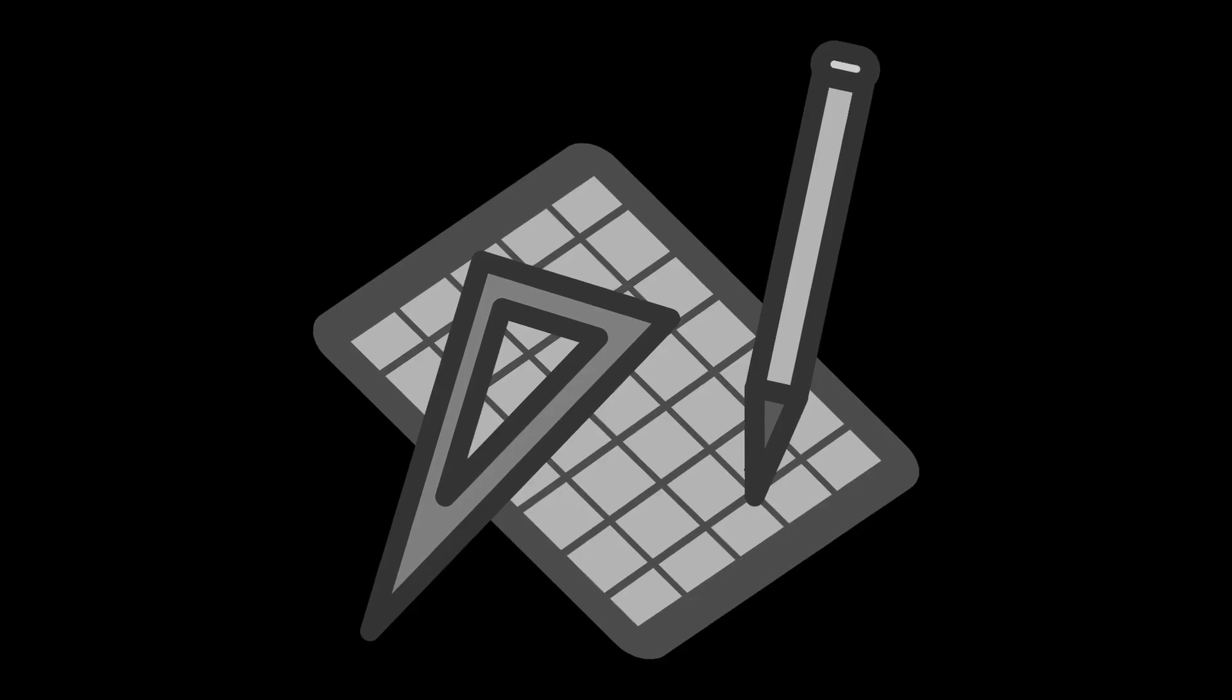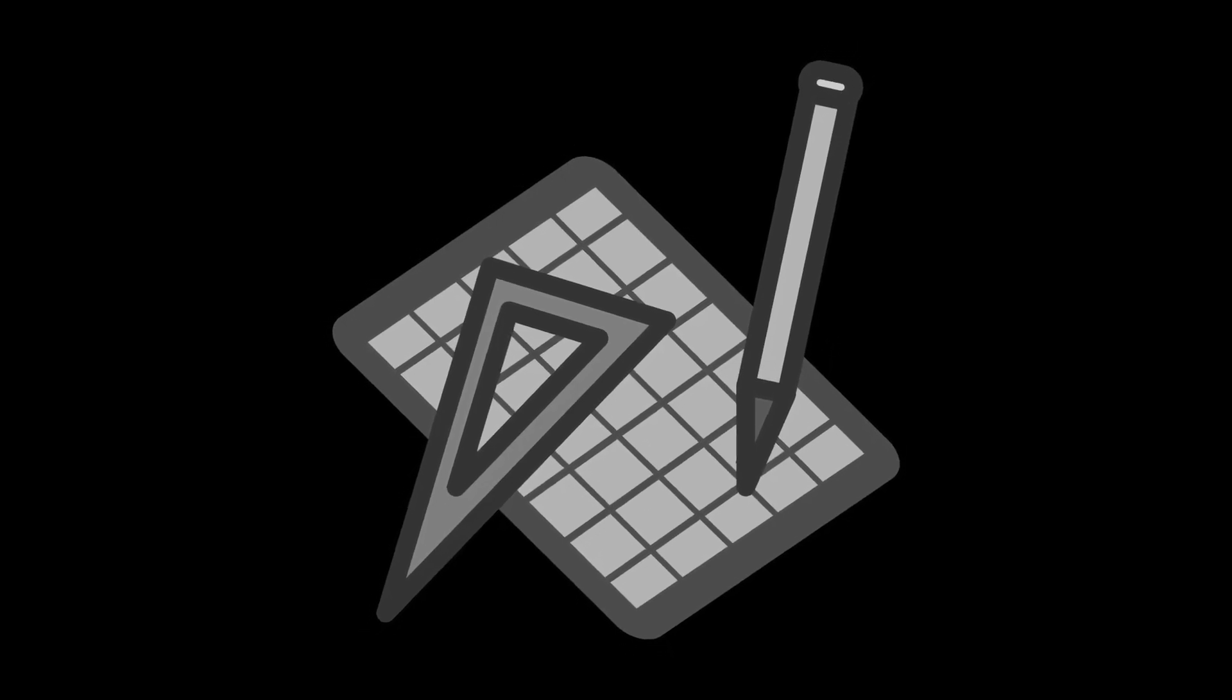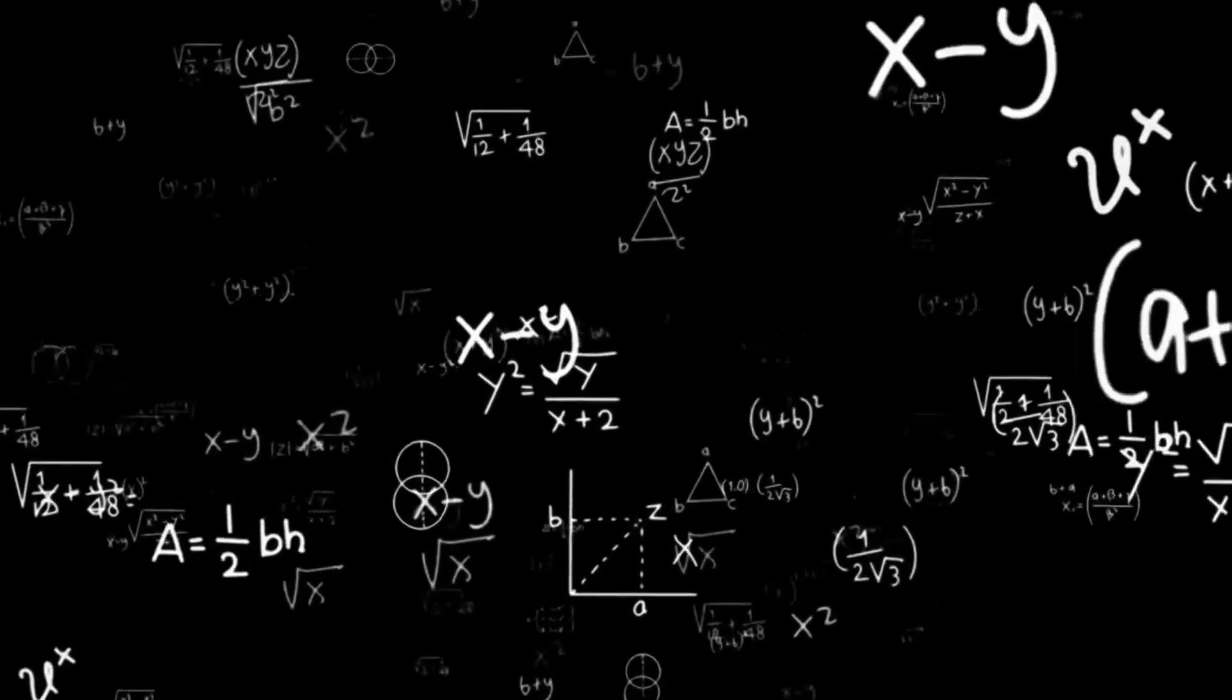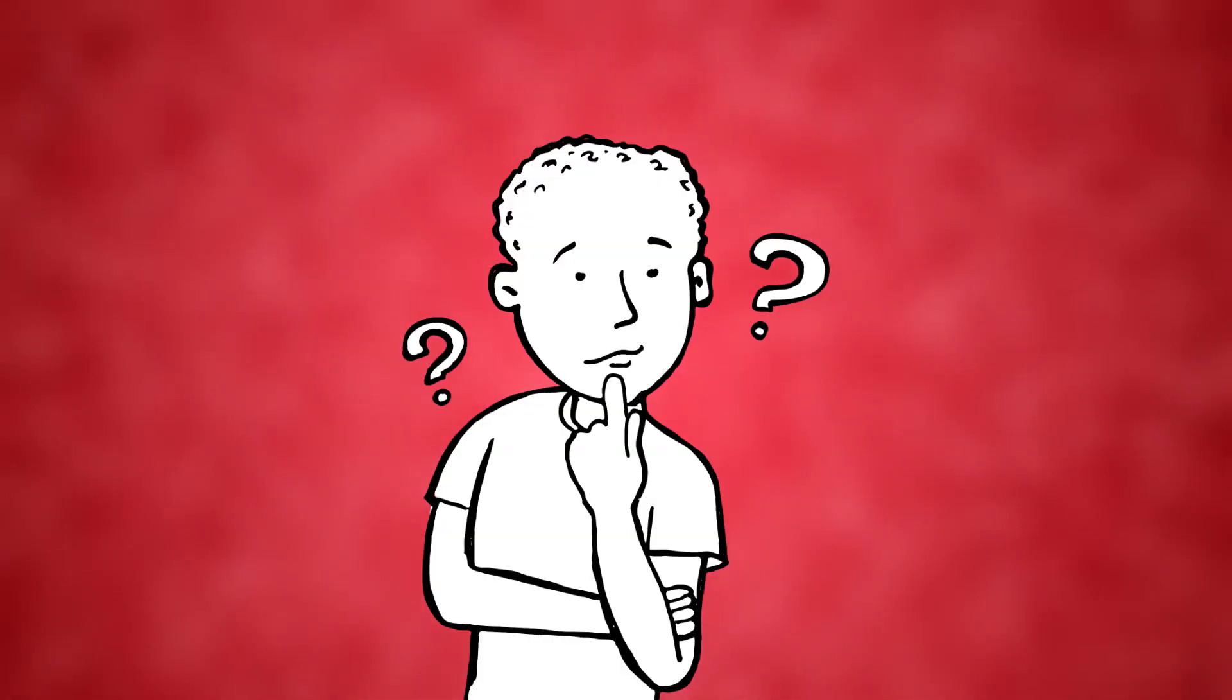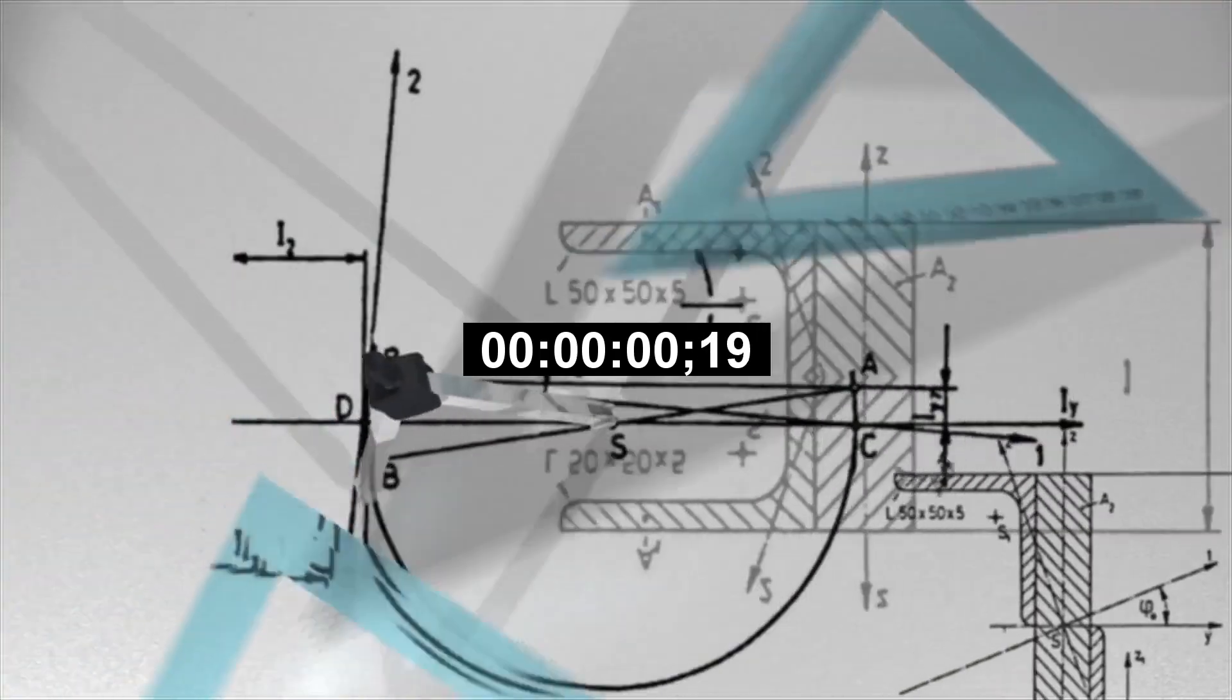All around the world, people found their own ways to make sense of numbers. Long before mathematics became a shared universal language, the Babylonians, over 4,000 years ago, built their numbers on base 60. It might sound strange today, but it worked beautifully for dividing time and space.